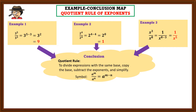In symbol: a raised to m over a raised to n is equal to a raised to m minus n. Just copy the base — the base here is a — and subtract the exponents — the exponents here are m minus n. This is the quotient rule for exponents.